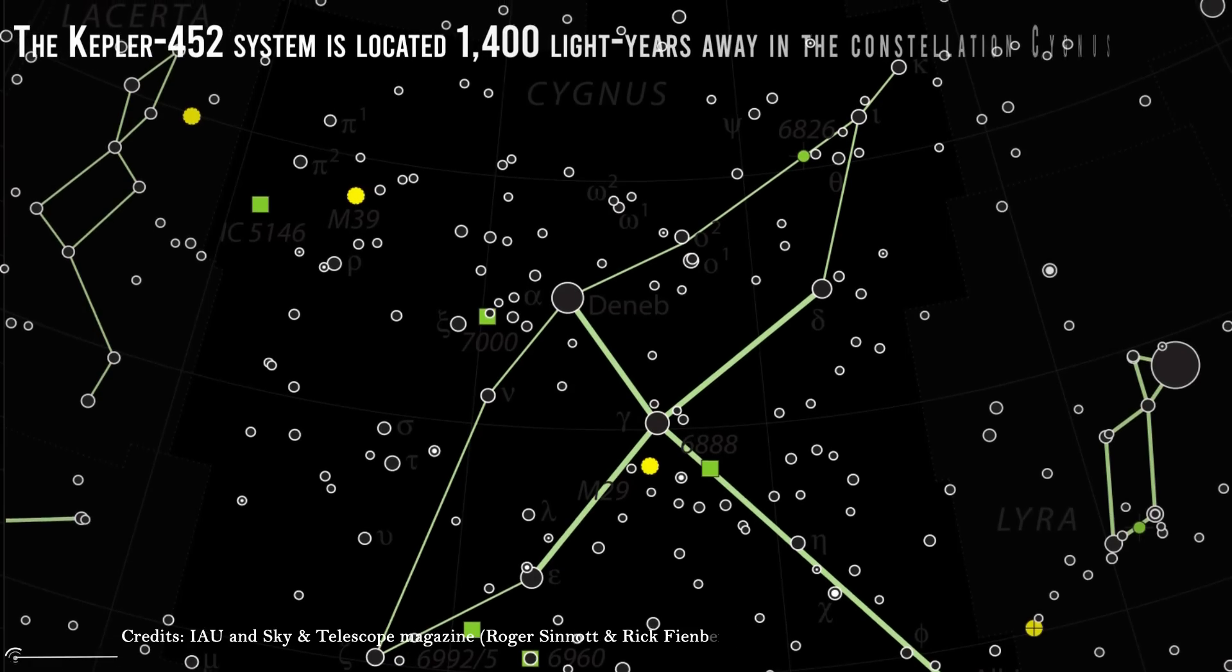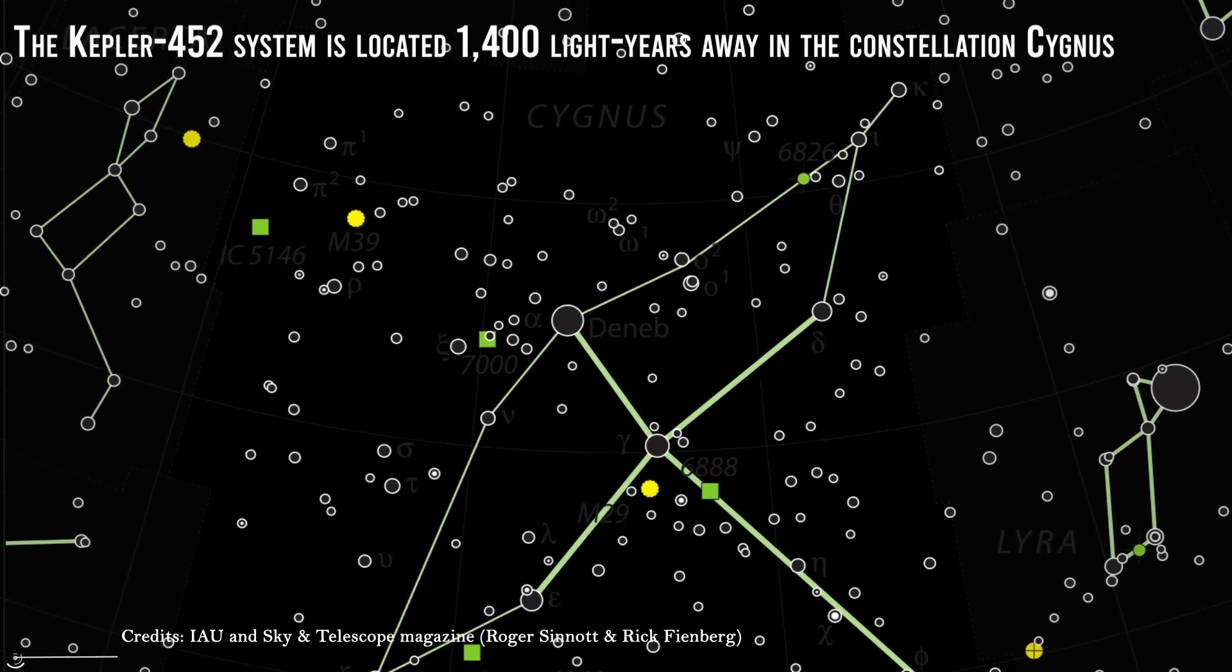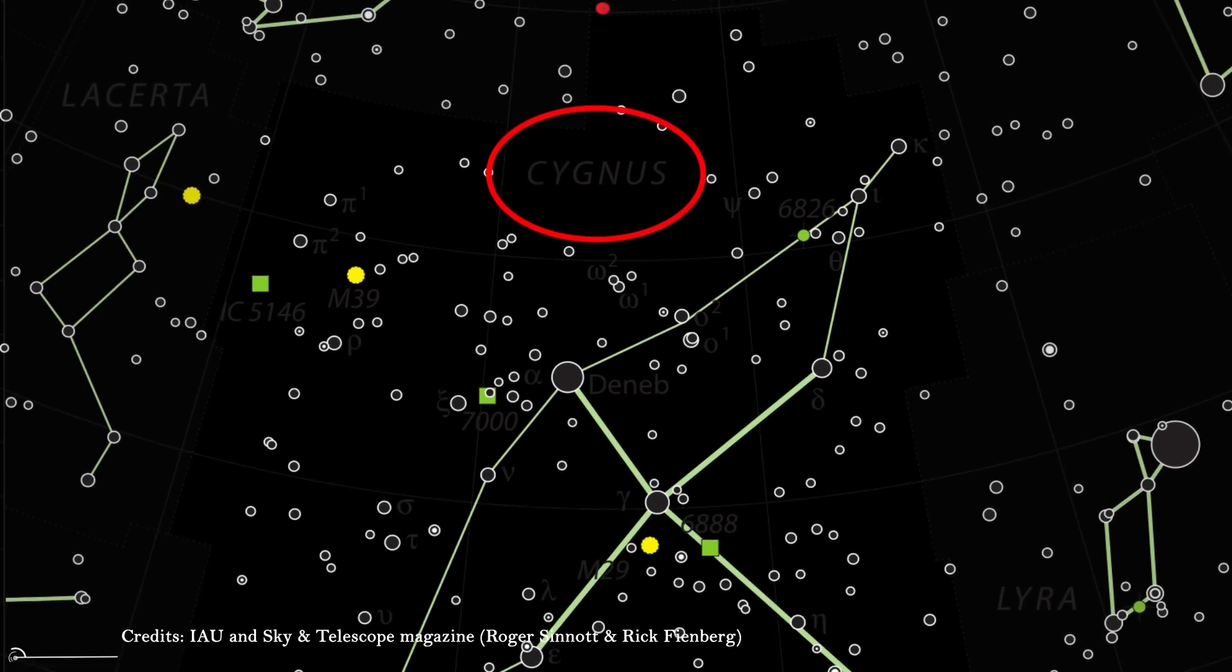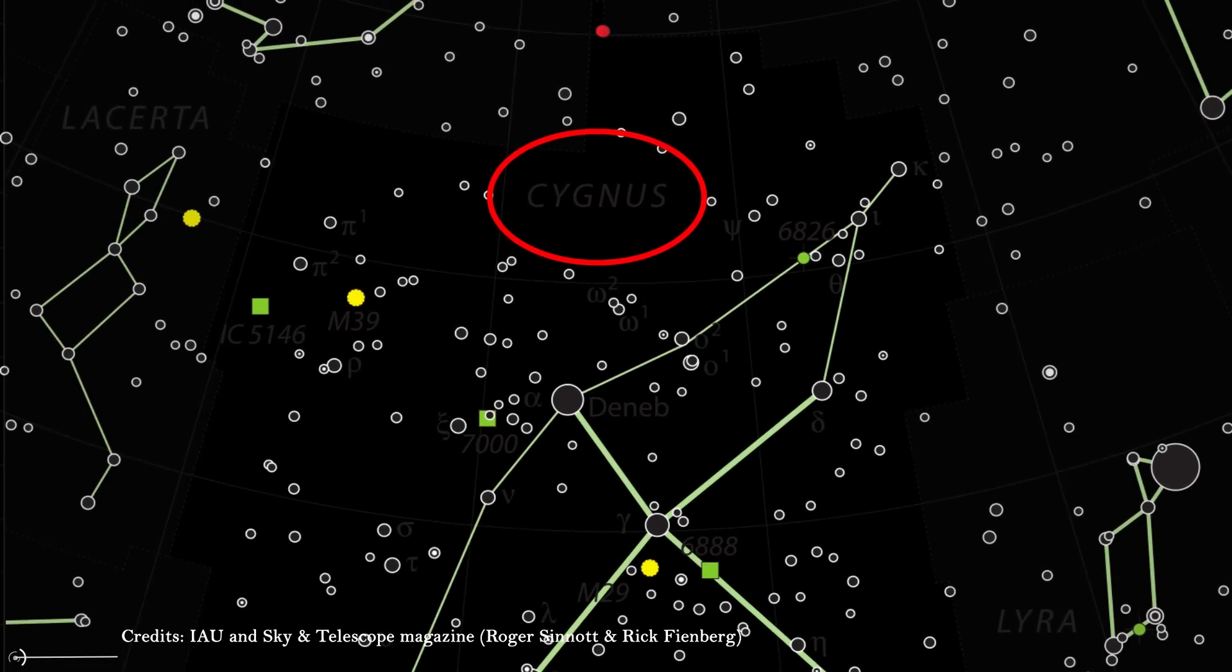The Kepler-452 system is located 1,400 light-years away in the constellation Cygnus. It's not the closest star system, but it is the closest thing to ours that has been found to date.